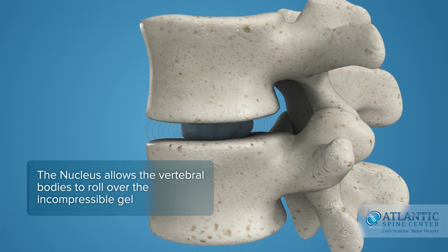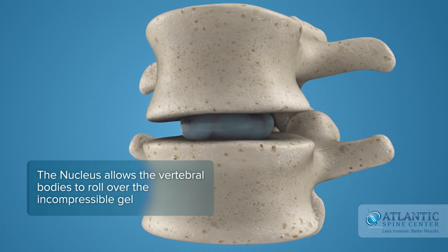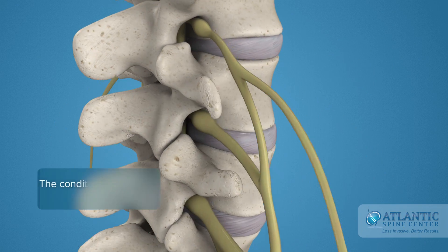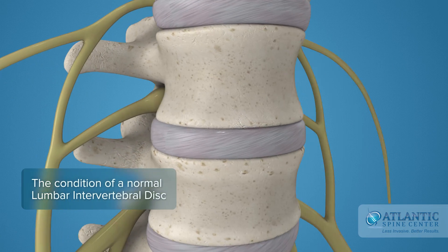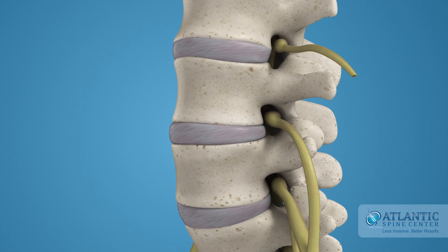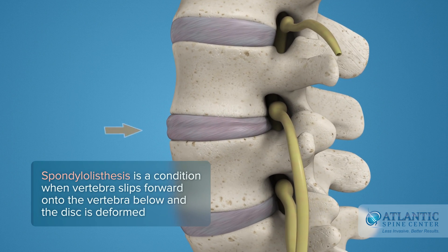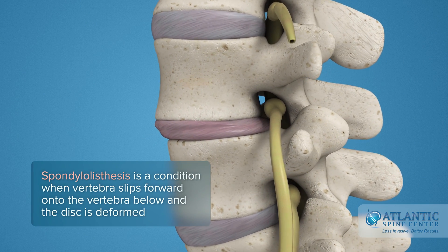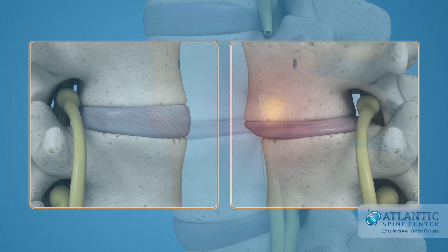When you bend, the nucleus acts like a ball bearing, allowing the vertebral bodies to roll over the incompressible gel. This is the condition of a normal lumbar intervertebral disc. Spondylolisthesis is a common lumbar spine problem where the disc is unstable and allows the upper vertebral body to slide forward.